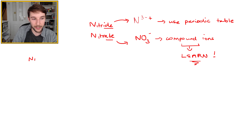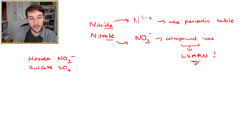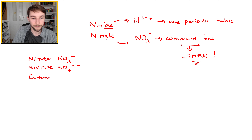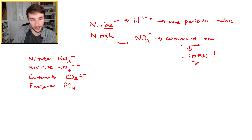Here are the compound ions you need to learn. Nitrate is NO3−. Sulfate — not to be confused with sulfide — is SO42−: one sulfur, four oxygens, overall 2− charge. Carbonate is CO32−: one carbon, three oxygens, 2− charge. Phosphate is PO43−: one phosphorus, four oxygens, 3− charge.